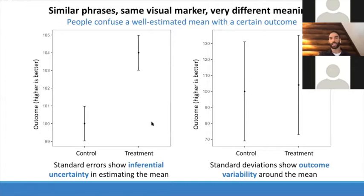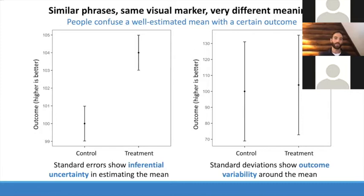On the left, what I'm showing is inferential uncertainty — some uncertainty about my inference on the mean for each condition. On the right, I'm showing information about outcome variability. Even though I'm showing the frequentist version of these things, the idea that these different notions of uncertainty and variability are often not well distinguished is a very important difference. This can happen regardless of the exact methodology behind how you're computing these intervals.